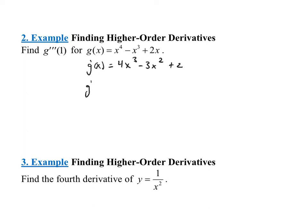Let's move on to the second derivative. The derivative of 4x cubed would be 4 times 3, which is 12x squared. The derivative of negative 3x squared would be negative 3 times 2, which would be negative 6x. The derivative of 2 is just 0, so we don't have to worry about that.